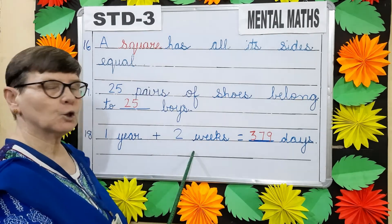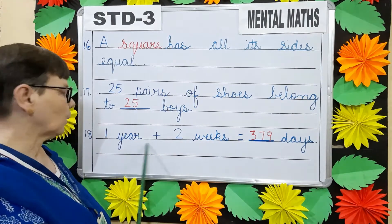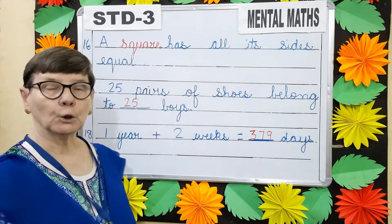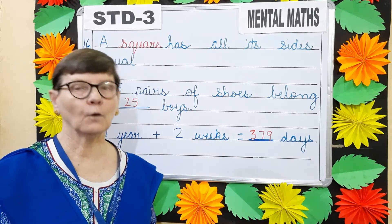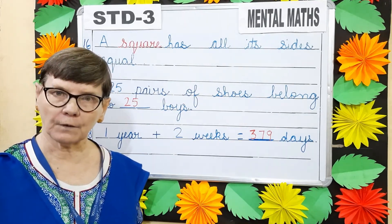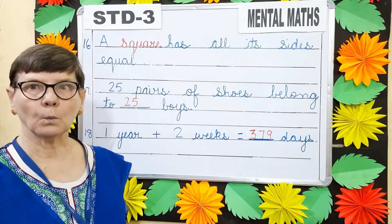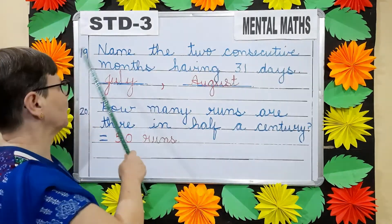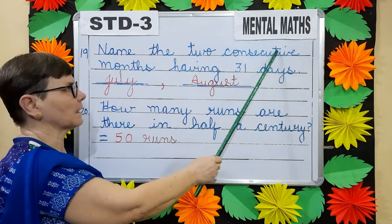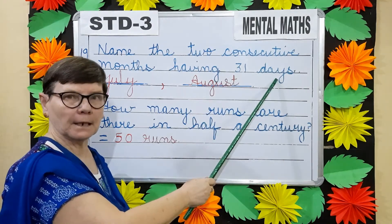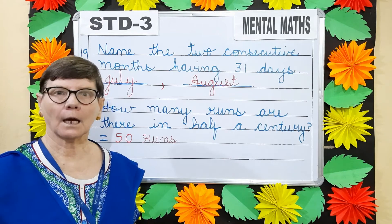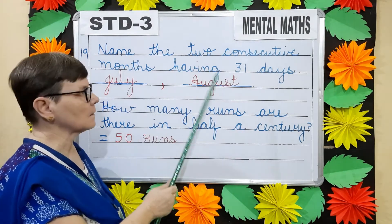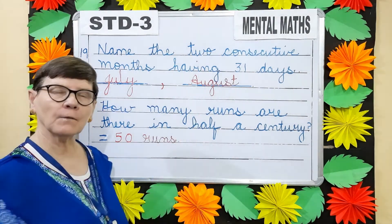Question number 18: One year plus two weeks is equals to dash days. In one year, how many days? 365. Plus two weeks — how many days in two weeks? 14. So 365 plus 14 will give you 379 days. Question number 19: Name the two consecutive months having 31 days. Consecutive means coming one after the other. So we have July, and after July is August — both these months have 31 days.